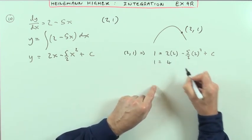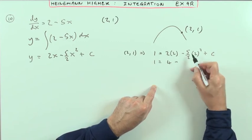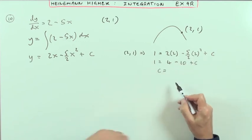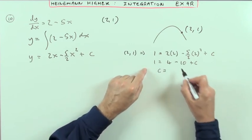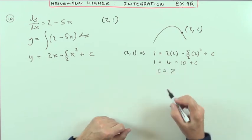So I've got 1 is equal to 4 minus, that looks like 5/2 times 4, so that's minus 10 plus C. So then I've got negative 6 for that, so C equals 7.